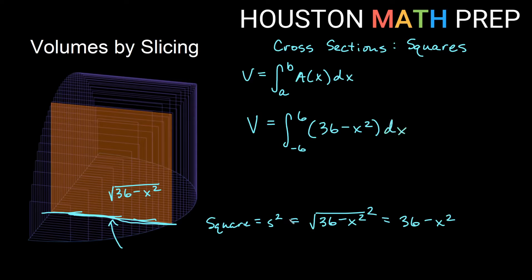So our volume for this one would be the integral from negative 6 to 6 of simply 36 minus x squared dx. And again, you can work this out. This isn't too bad. Just power rule plugging in. You should be able to get something for this.